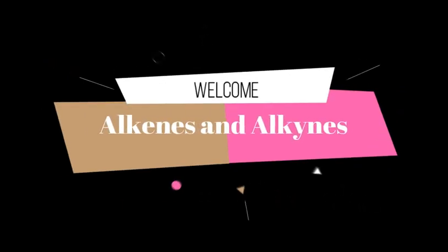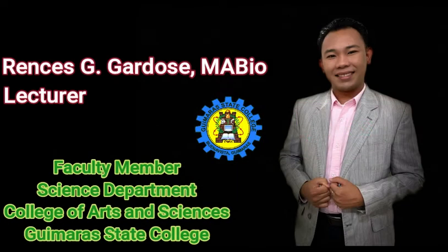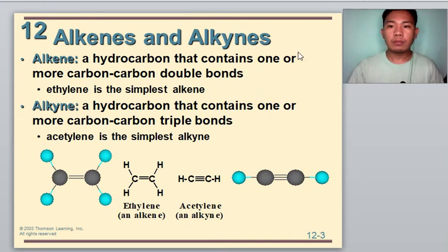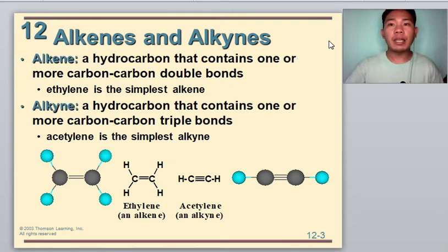Welcome. Our topic is all about alkenes and alkynes. We will begin our study of unsaturated hydrocarbons. We can recall from the previous lecture that these unsaturated carbons contain one or more carbon-carbon double bonds, triple bonds, and/or benzene-like rings.